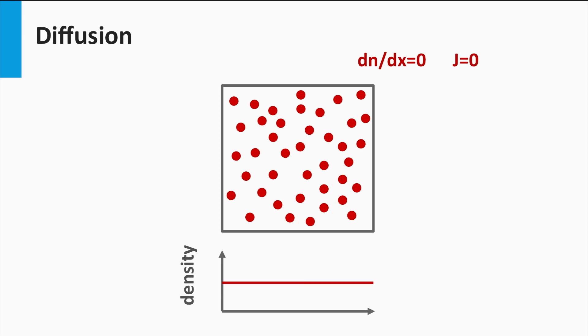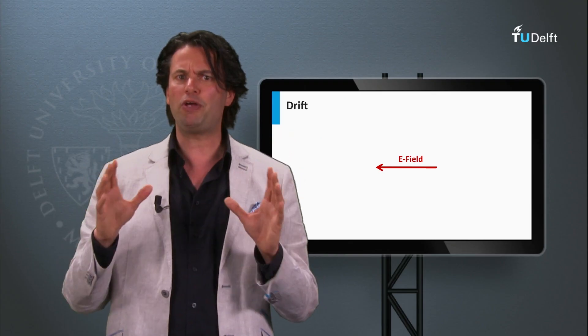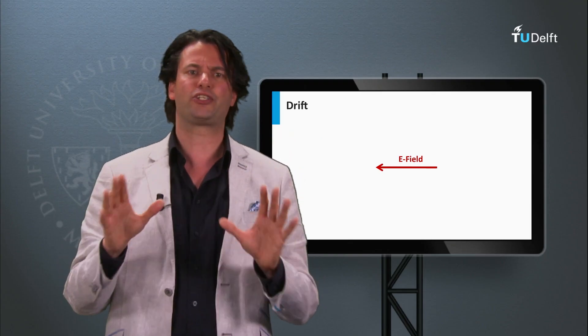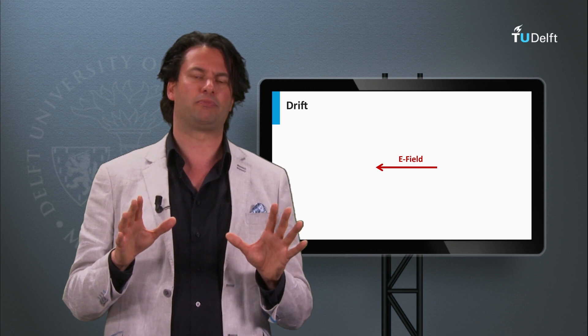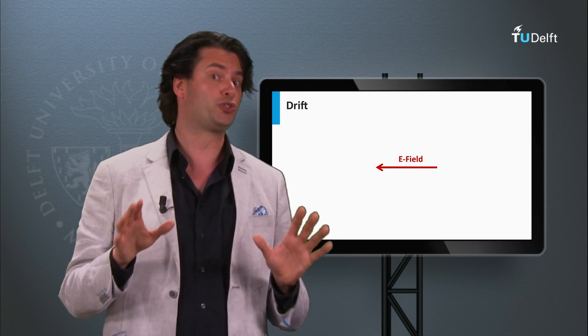The same equation is valid for holes. The diffusion of holes results in a net movement of holes toward locations with lower hole densities. Now we move to the second transport mechanism, which is called drift.